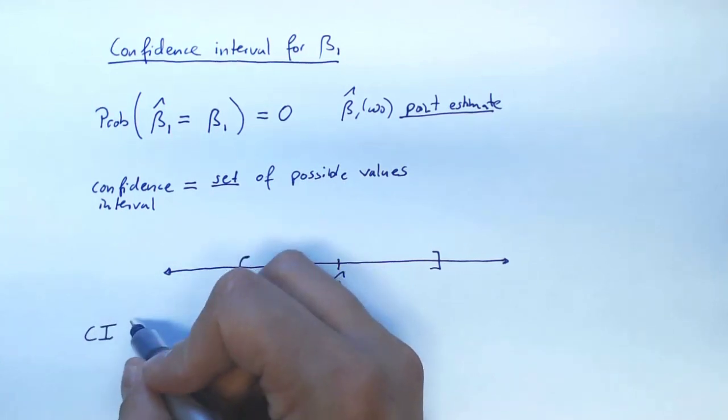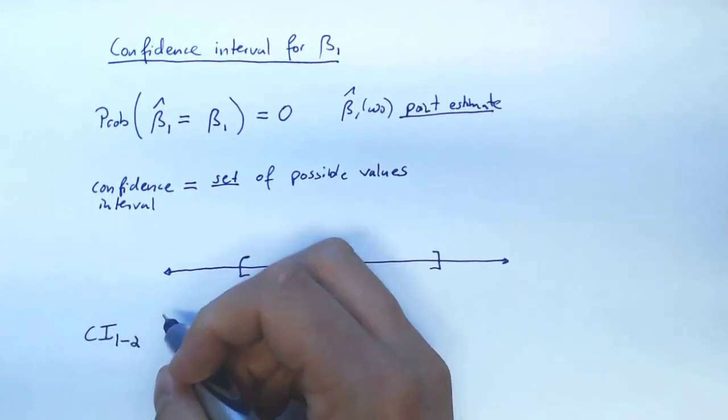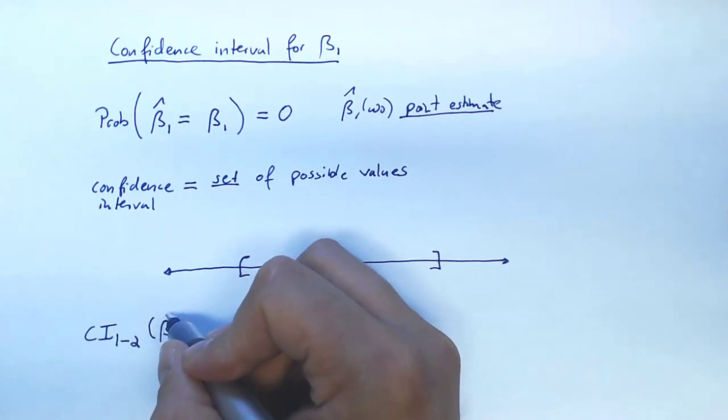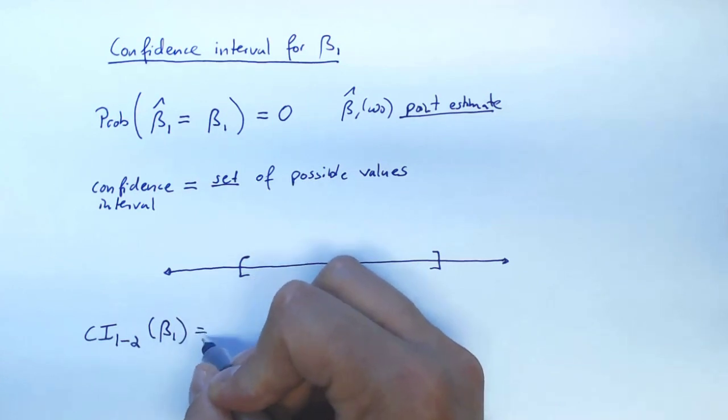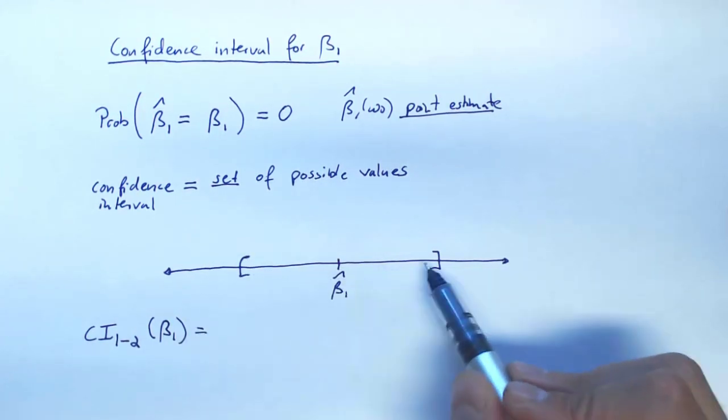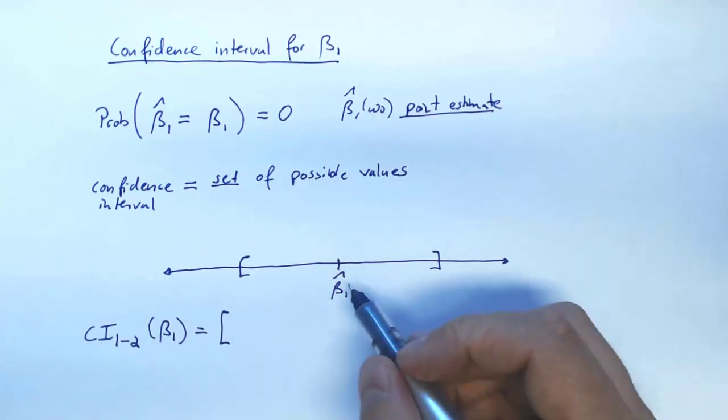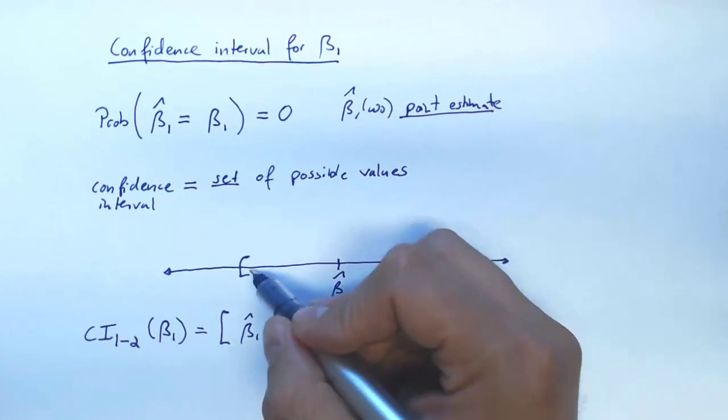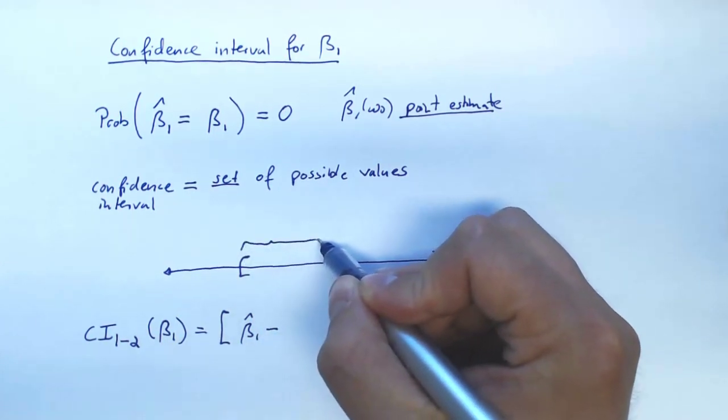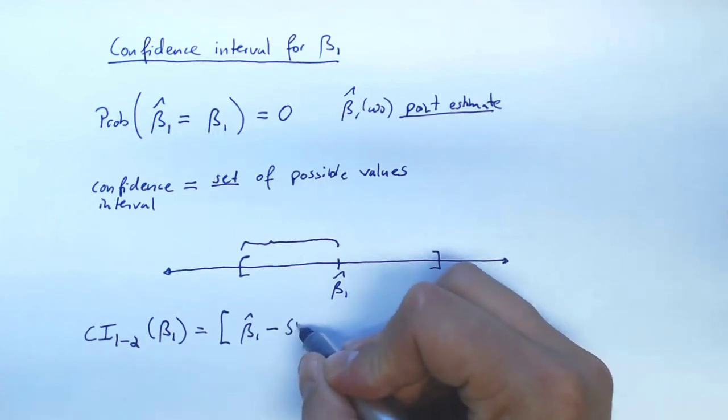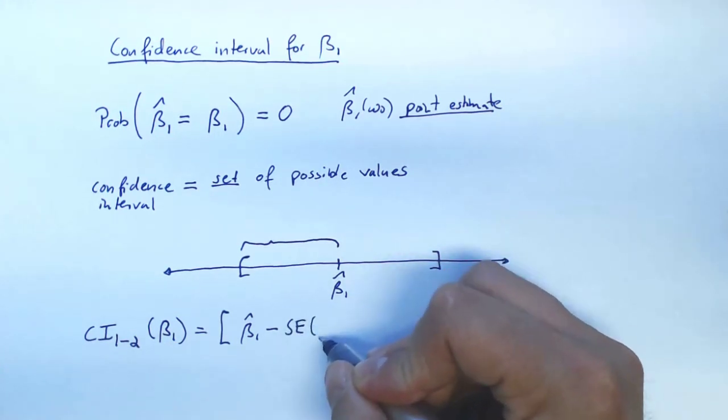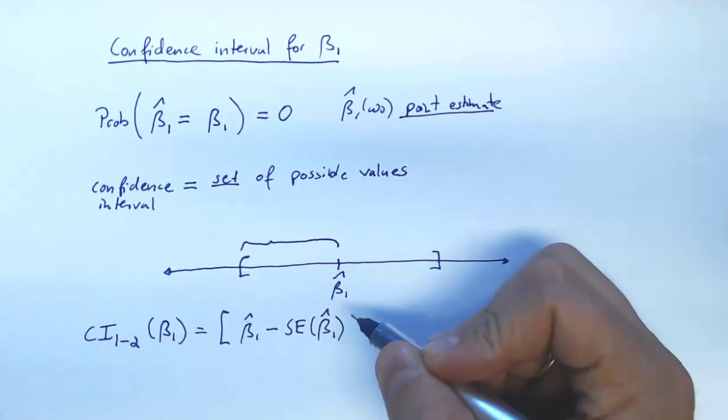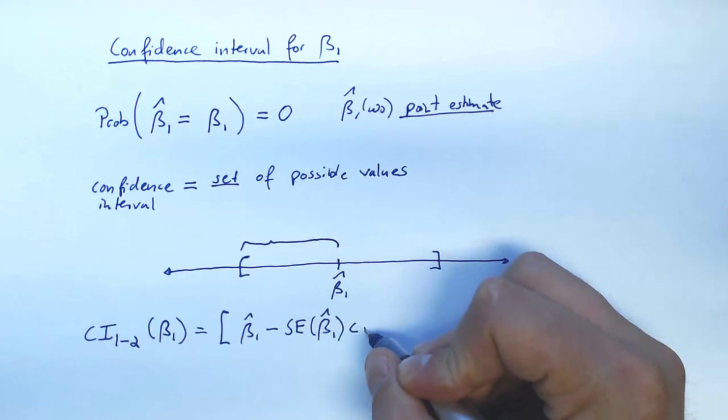So let's put the confidence interval for beta 1. It is this interval from the lower bound to this upper bound. And this lower bound will be the center of the interval minus this distance. And it's a good idea to take this to be the standard error of beta 1 hat times C alpha.